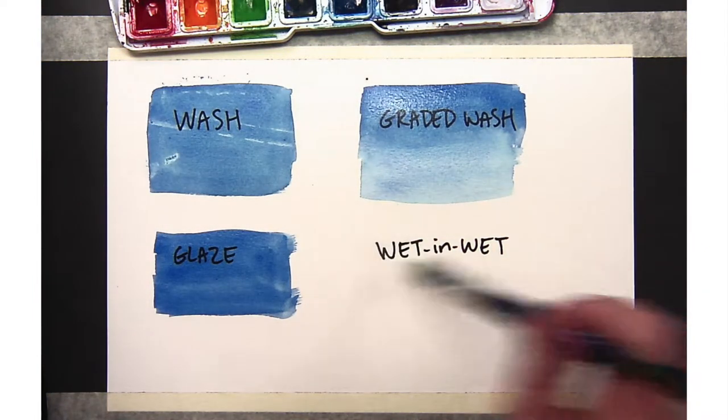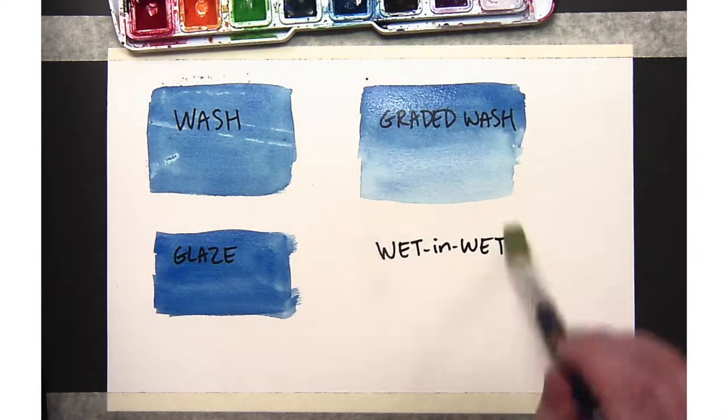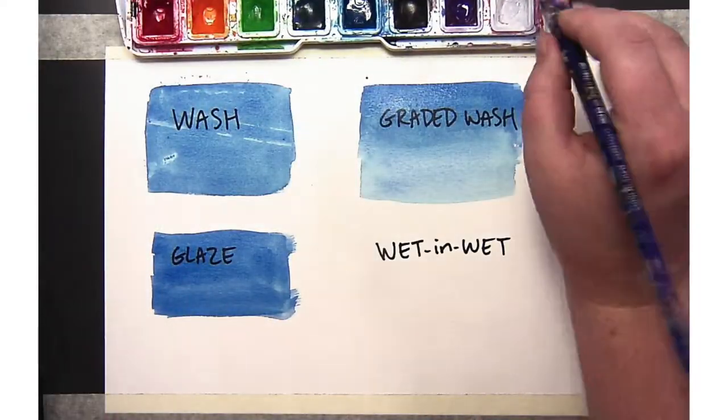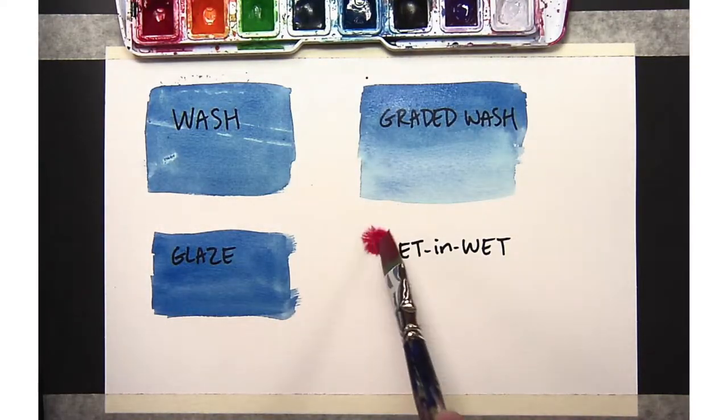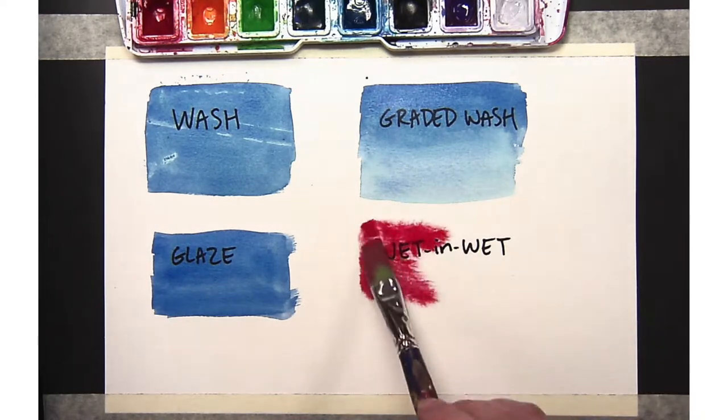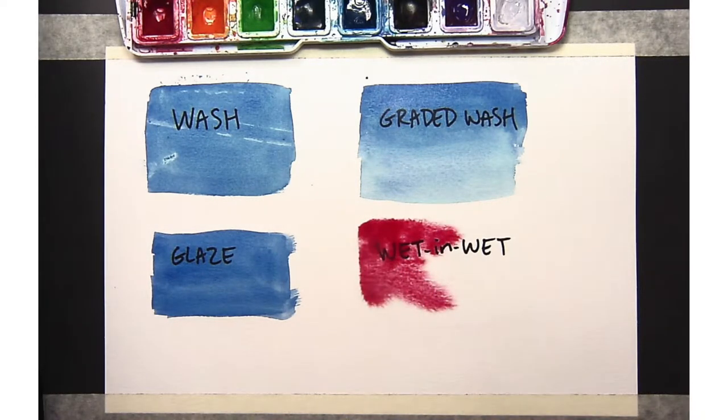So wet-in-wet, I have a perfectly clean brush, and I'm painting on clear water. So it's almost hard to see here, but I just painted just water on my paper. And now when I drop a new watercolor onto it, you can see it just sort of spreads on its own. So this is a really fun technique.